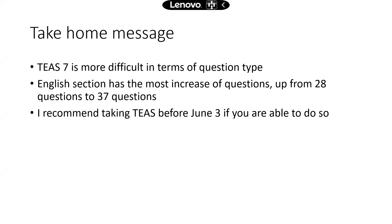The take-home message is that TEAS 7 is going to be more difficult than TEAS 6, in my opinion. In terms of question types, you're going to get some new types — they're not just as simple as selecting one correct answer out of four. A lot of times you have to really make sure which answer choice is correct, rank things in the correct order by yourself, and for those questions you cannot get partial credit — either you're all right or you get zero. The English section has the most increase in questions, jumping from 28 to 37, so it might be a good idea to spend a little more time on English when you prepare for TEAS 7.